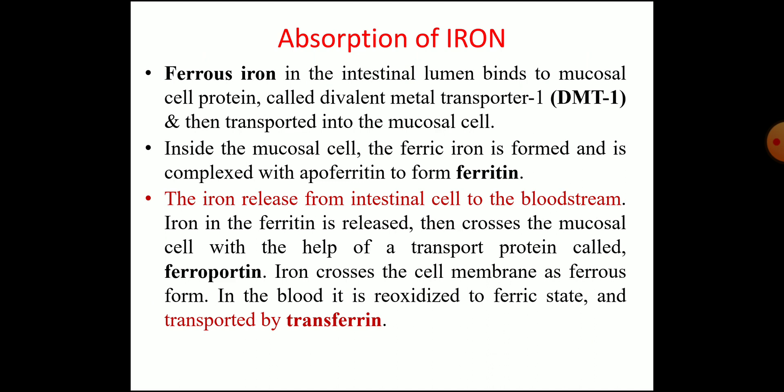The release of iron from the intestinal cell to the bloodstream is a separate process. Iron in the ferric form inside the mucosal cell is converted back to ferrous and then crosses the cell membrane through the transporter protein called ferroportin. In the blood, the ferrous iron is re-oxidized to the ferric state by ceruloplasmin, which has ferroxidase activity. The ferric iron then combines with apotransferrin to form transferrin, which is the transport form of iron in blood.